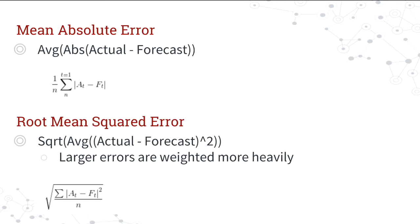For each forecasted value and each actual value, you figure out the absolute value and then take the average. It's important to note that this is the absolute value, because this ensures that if one error is one and another error is negative one, the mean absolute error is still one rather than them canceling out — since one plus negative one equals zero.